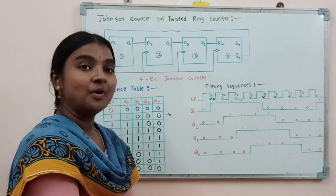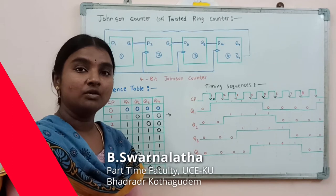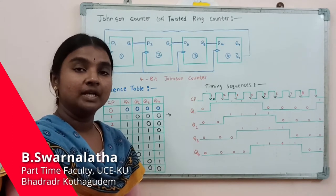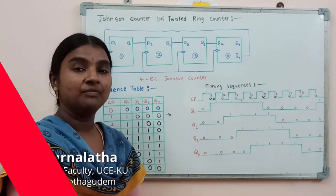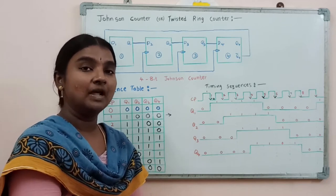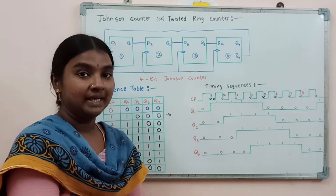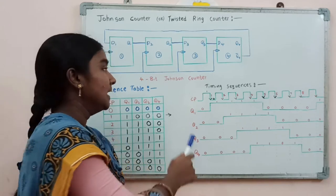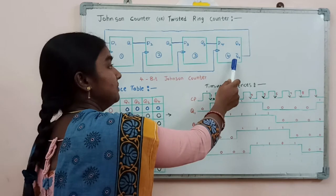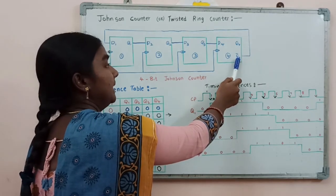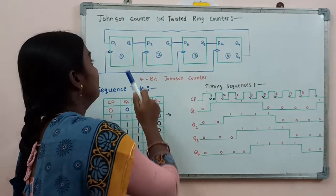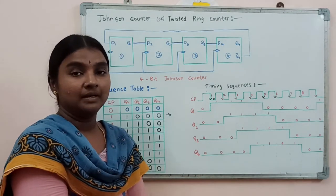There is a small difference between a ring counter and a Johnson counter. In the ring counter, the output of the last flip-flop Q is given as input to the first flip-flop input. But here in the Johnson counter, the last flip-flop Q complement is given as input to the first flip-flop input.